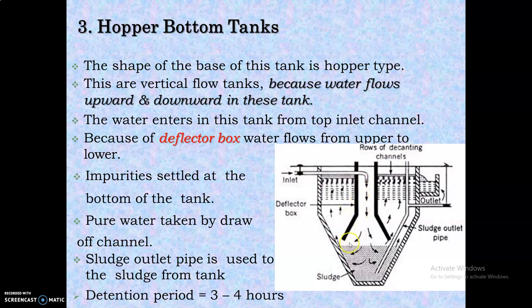In the hopper bottom tank, water is taken inside and a deflector box is placed which allows the water to move in a vertical manner. Because of movement in the reverse direction, the particles start settling. The flow of water will be in a vertical flow tank.